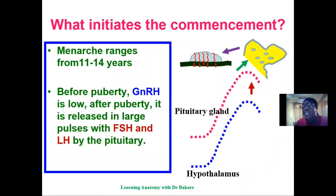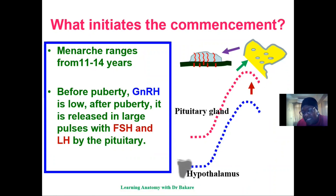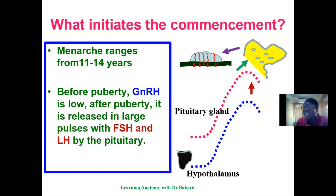What initiates menarche is the increase in the release of gonadotropin-releasing hormone (GnRH), which subsequently increases the release of follicle-stimulating hormone (FSH) and luteinizing hormone (LH). The hypothalamus is a region in the brain that produces GnRH.